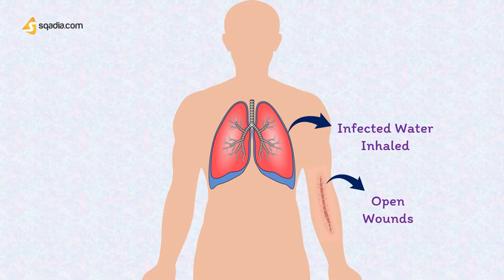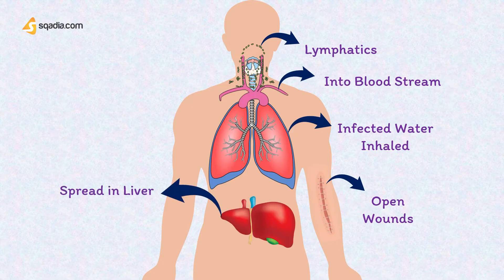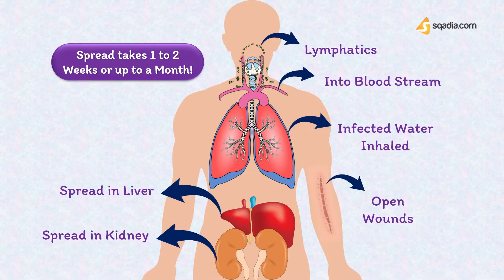Once within the body, the bacteria go into the lymphatics and then into the bloodstream. From the bloodstream, the infection can spread to the entire body but tends to settle more in the liver and kidneys, which is why in the severe form, liver and kidney failure can lead to fatality. It usually takes between one to two weeks for the infected person to begin to show symptoms, but could take up to a month.